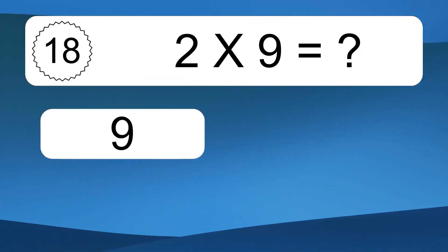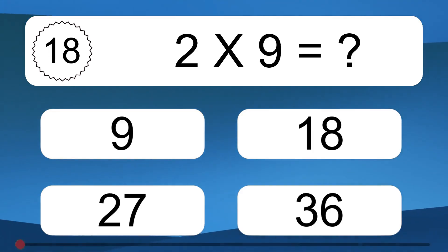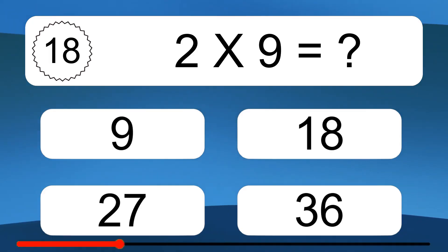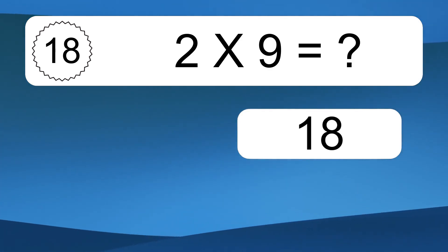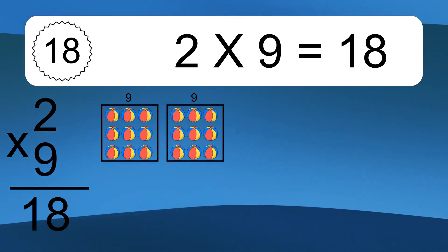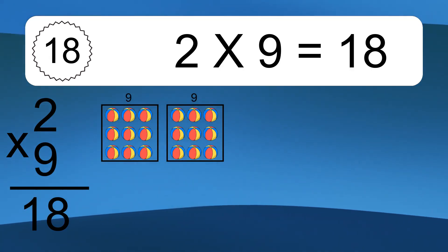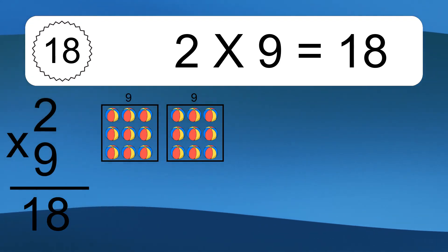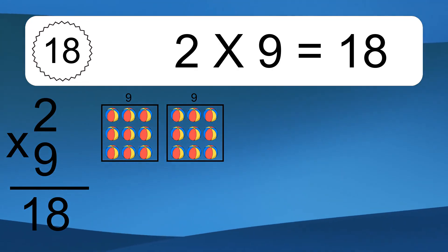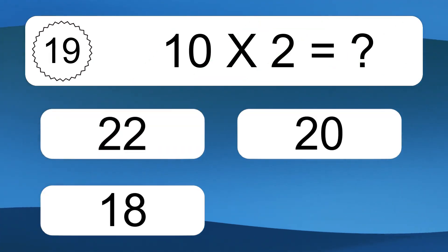2 times 9 equals what? 2 times 9 equals 18. We have 2 boxes, and each box has 9 colorful balls inside. If you count all the balls in all the boxes together, you will have 2 times 9 balls. This equals 18 balls.